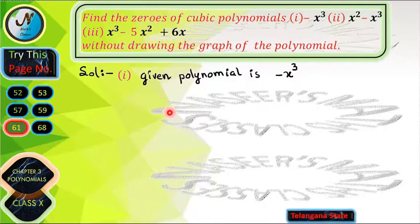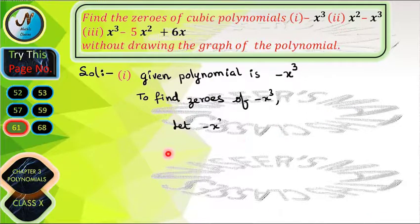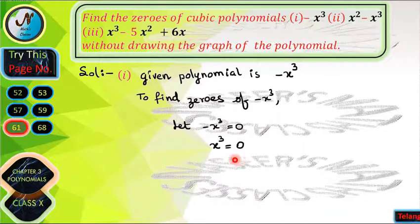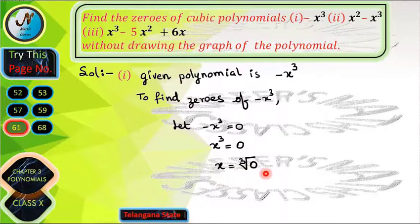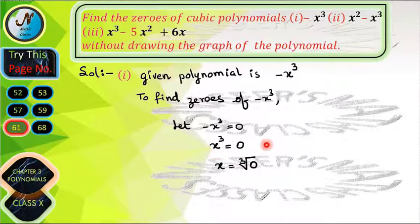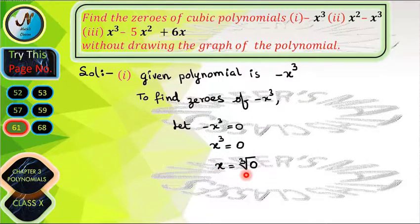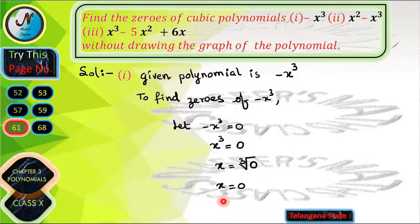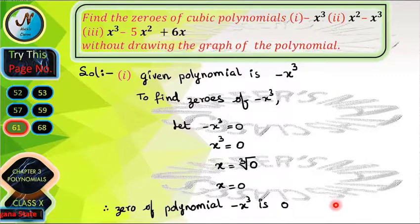To find the zeros of −x³, we set −x³ = 0, which gives x³ = 0. Taking the cube root of both sides, x = cube root of 0, which equals 0. So x = 0 is the only zero of the polynomial −x³; it has only one zero.